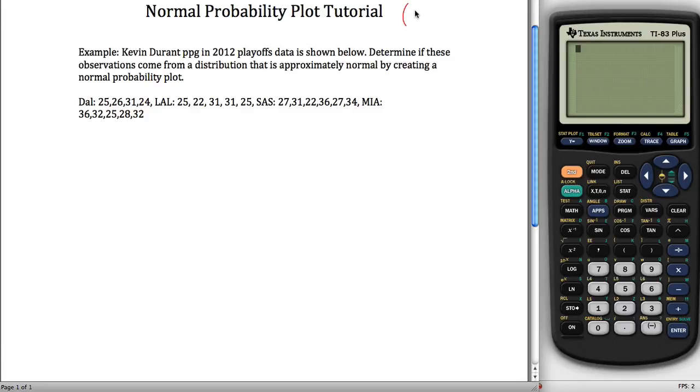This is a tutorial on creating a normal probability plot with a TI-83 Plus or similar calculator. The idea with the normal probability plot is if you just have data, some numbers, and you're curious if this data came from a distribution that's approximately normal.